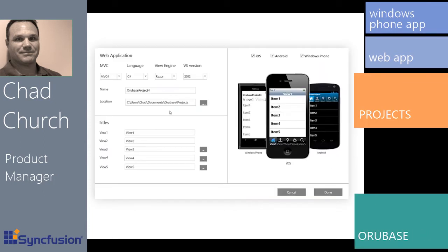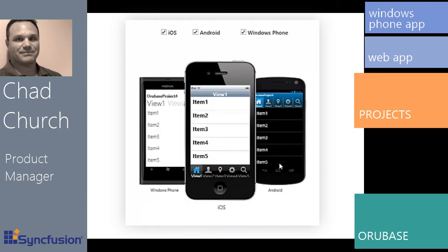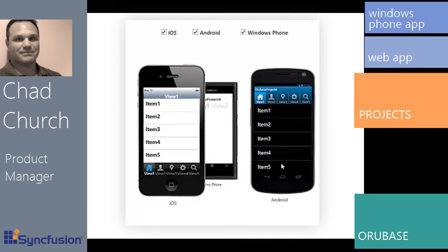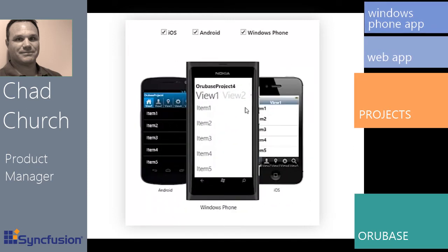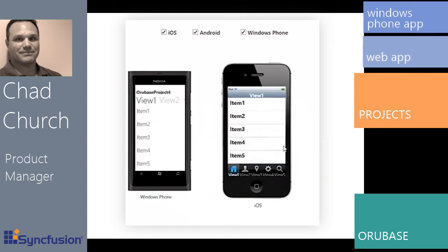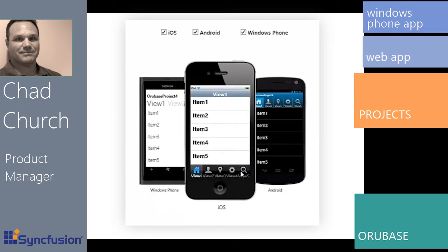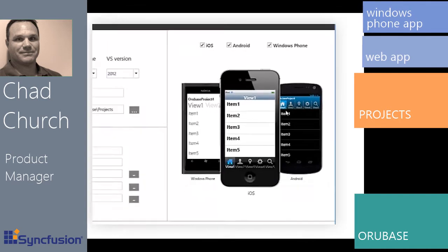Here it is. The first thing you're going to notice are the images on the right — we have an iPhone, an Android phone, and a Windows Phone. You'll notice each phone has their native navigation components: at the top there's the pivot items for Windows Phone, and the tab items for both iOS and Android.